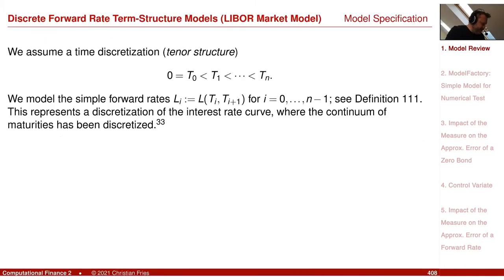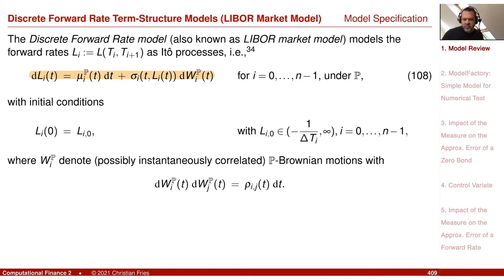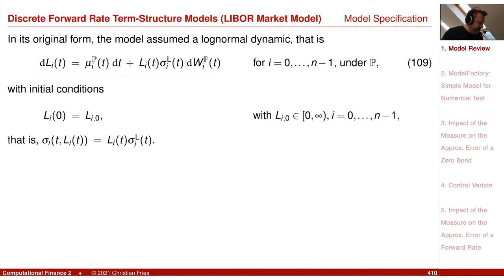Our model specification was that we had a time discretization for the periods of the forward rates — our tenor structure. Every forward rate was following an SDE process. If you choose the sigma_i parameter in front of the dW as sigma_i times L_i, then this is just the Black model or the Black-Scholes model for the forward rate.